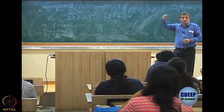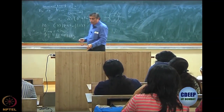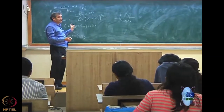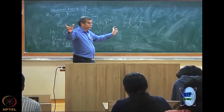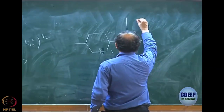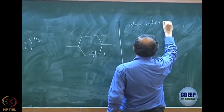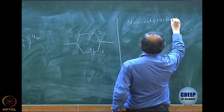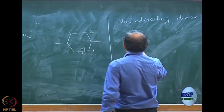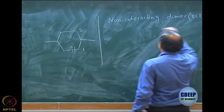What we want to show now is what happens for two hydrogen molecules. This is for a single hydrogen molecule; now we consider two hydrogen molecules which are far apart. So we are discussing the case of a non-interacting dimer, and we are again doing DCI in the minimal basis.